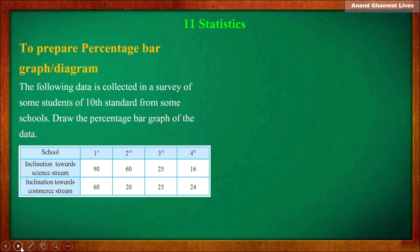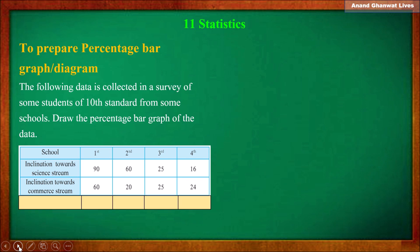From this given data we have to prepare the percentage bar diagram. First we want the total number of students in each school. Total students in first school: 150; second school: 80; third school: 50; fourth school: 40. Now let us calculate the percentage of science stream for each school.